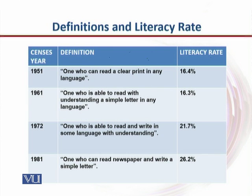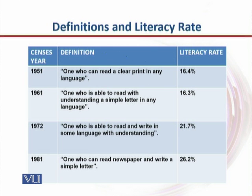Nine years later, in 1981, the definition changed to one who can read a newspaper and write a simple letter — but 'with understanding' was no longer required. Reading a newspaper and writing a simple letter in any language was sufficient, and the literacy rate again improved by about 5% to 26.2%. Looking from 1951 to 1981, a 30-year span, we improved by only 10%, roughly 0.33% per year — a very poor rate of progress.